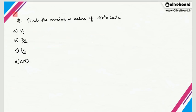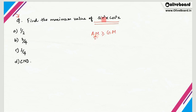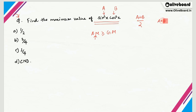Now let's move on to question number 4, which is very important. It asks: find the maximum value of sin²x × cos²x. In this type of problem, you can use the AM-GM inequality: arithmetic mean is always greater than or equal to geometric mean. With two numbers A and B, arithmetic mean = (A + B)/2 and geometric mean = √(A × B), and AM ≥ GM always holds.